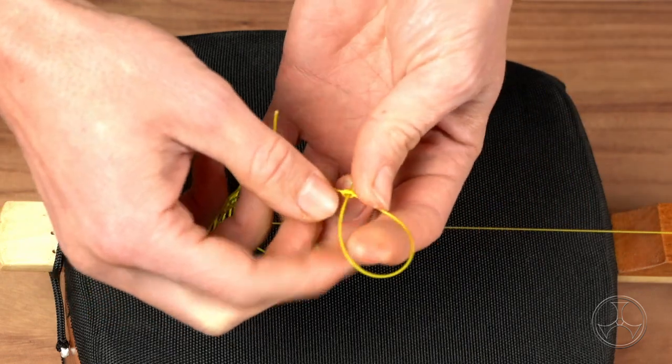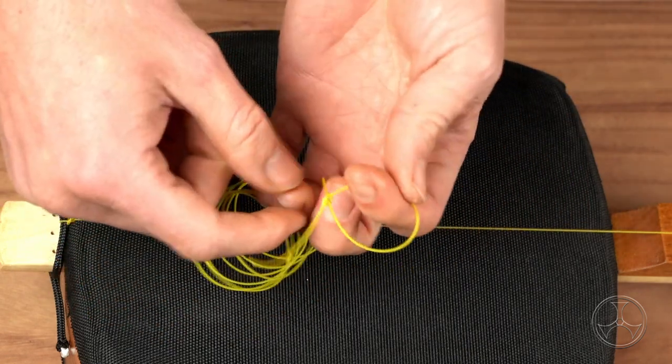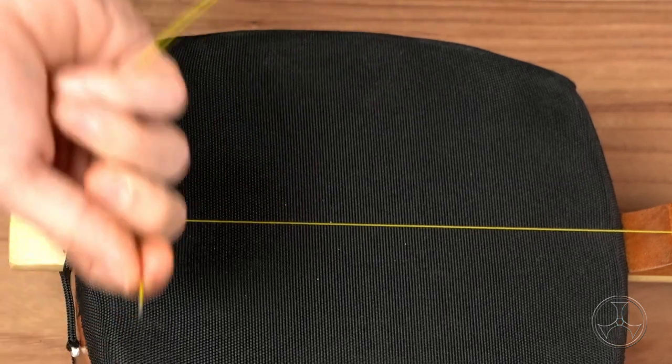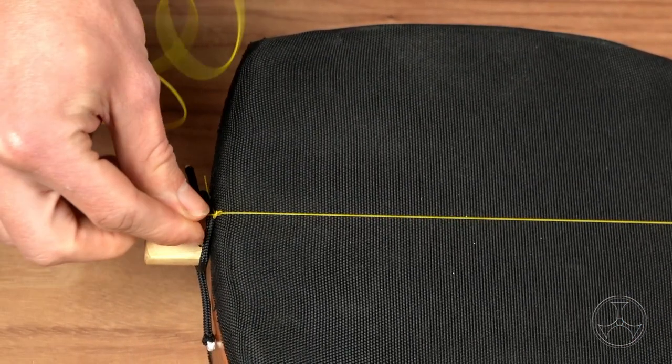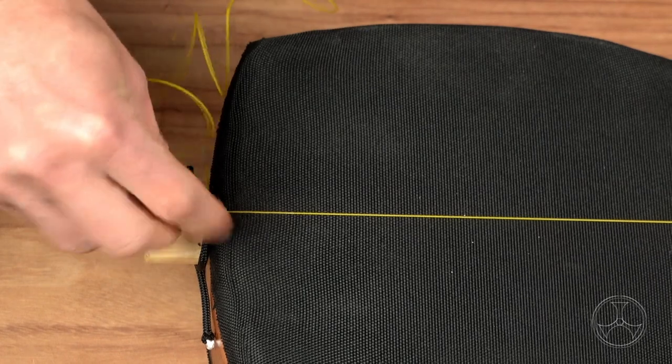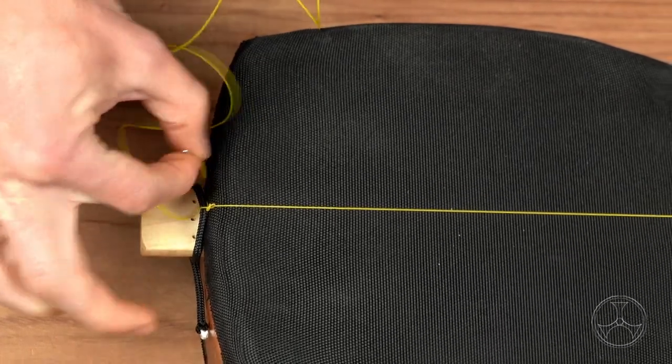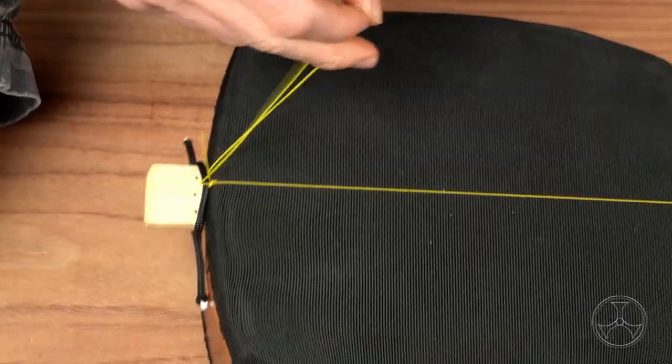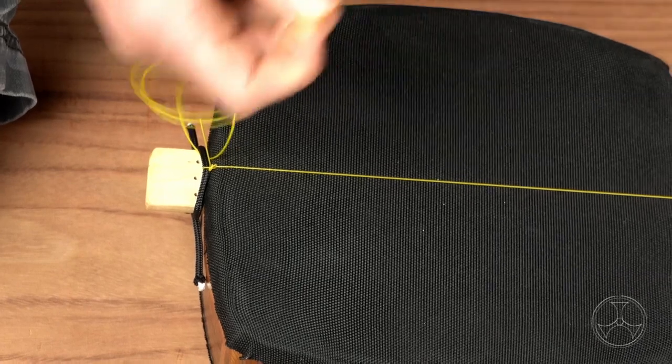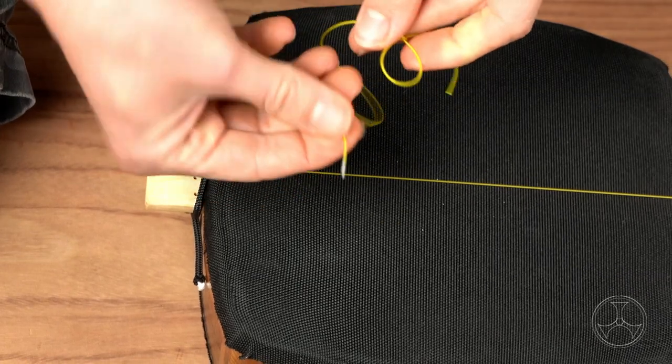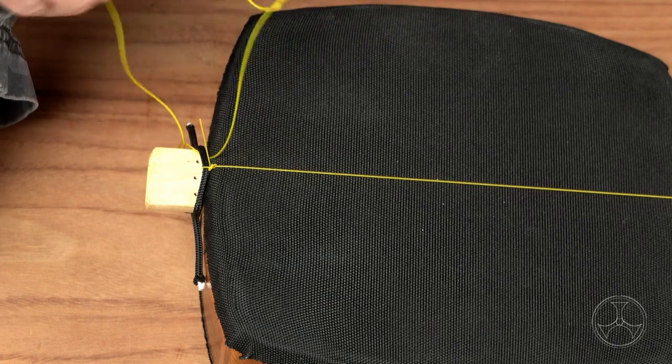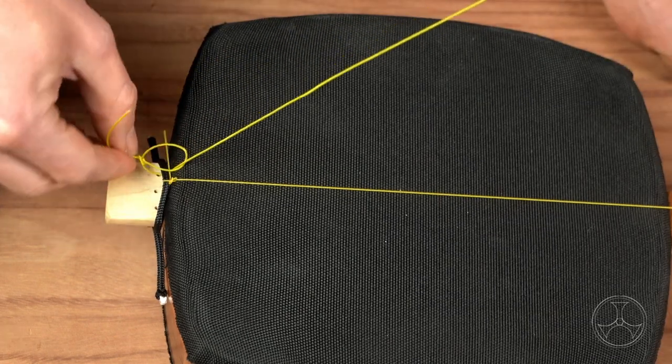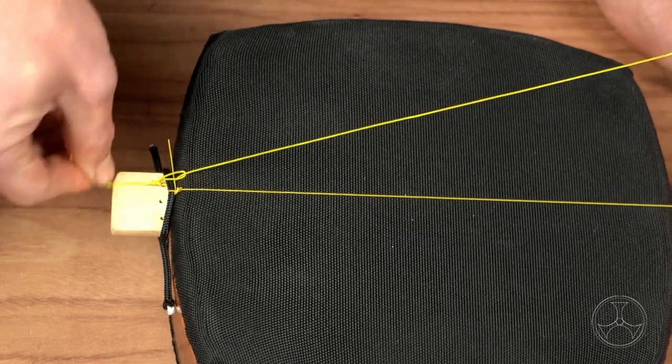This loop we have, put your finger just to hold it there. Take the other end like so. Put this through the tail piece, feed it to the side. Then we can grip it here. Pull it through a little bit. Now feed it through the loop of the slipknot. Pull and tighten.